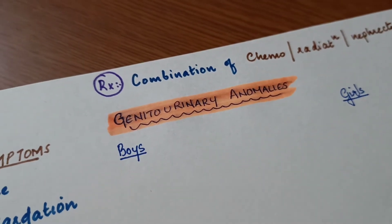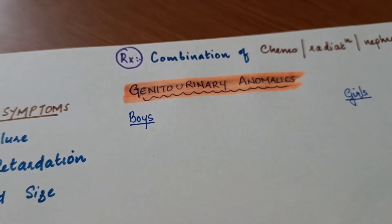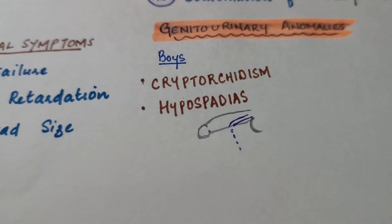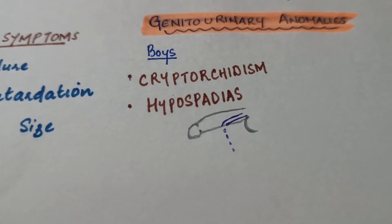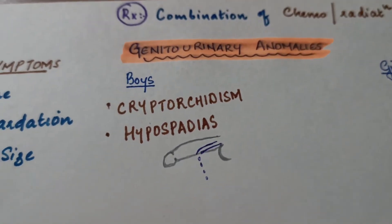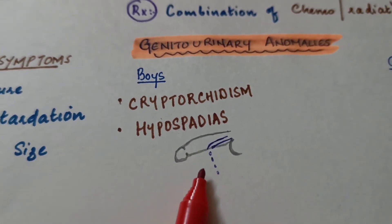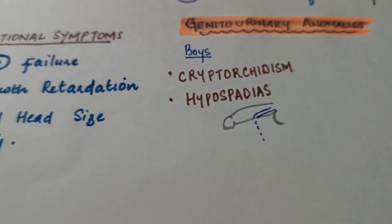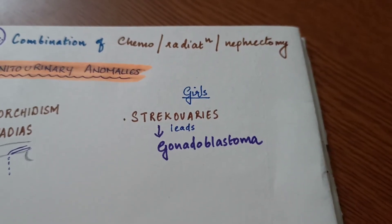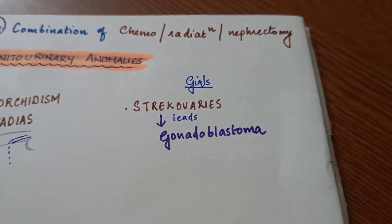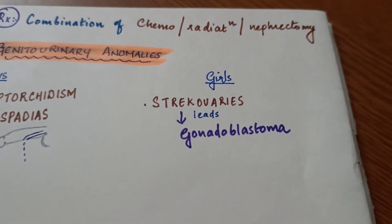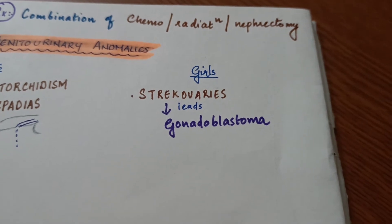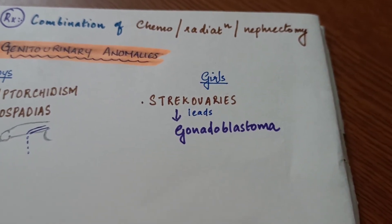Genitourinary anomalies in boys include cryptorchidism (undescended testis) and hypospadias, where the urethral opening is on the underside of the penis rather than at the tip. In girls, streak ovaries are the main anomaly — these are underdeveloped and non-functional ovaries that increase the risk of a tumor called gonadoblastoma.